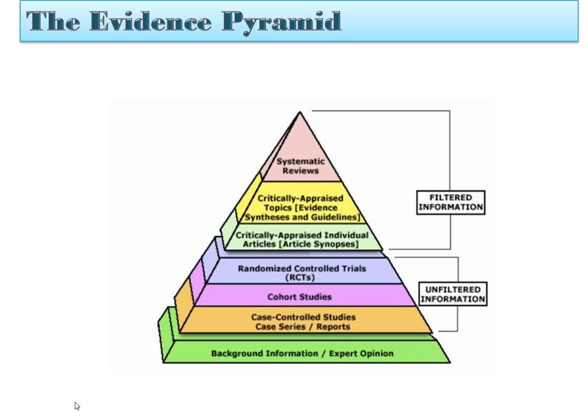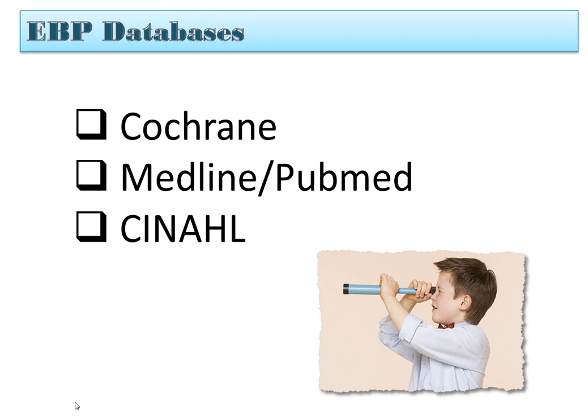If you see the evidence pyramid here, this is another example of the hierarchy of evidence developed by the Yale Medical School librarians, where systematic review is on the top and expert opinion on the bottom. Next we'll talk about databases to search for evidence-based practice, so please go on to part two.